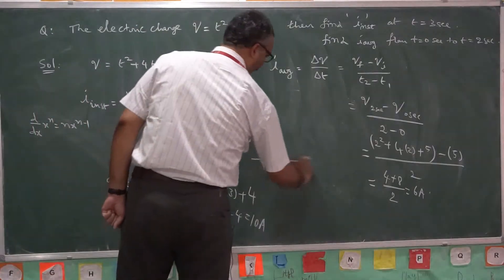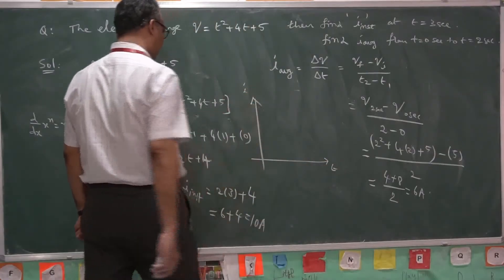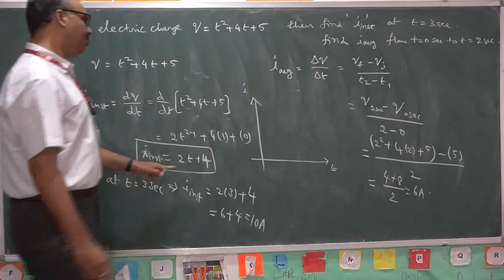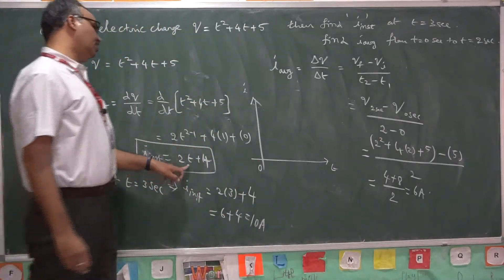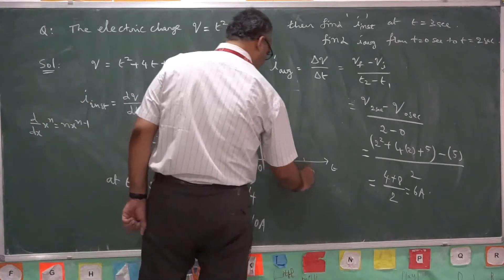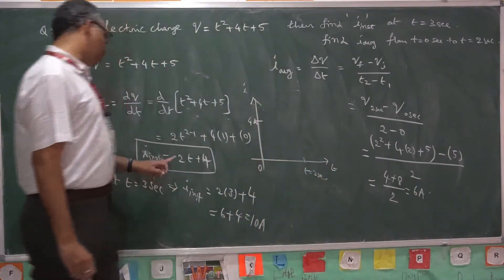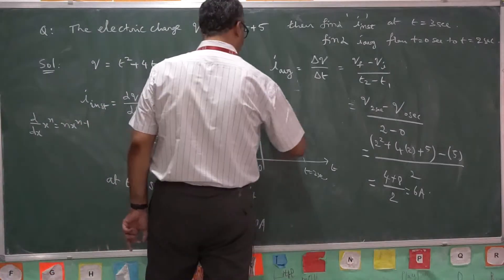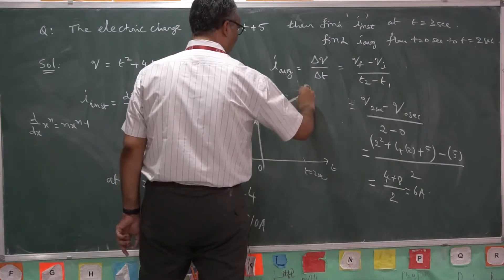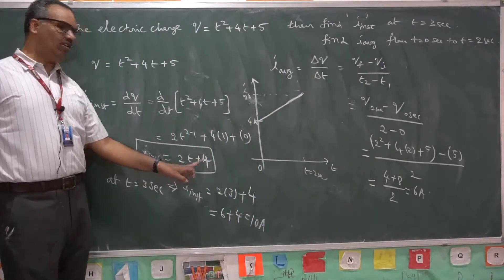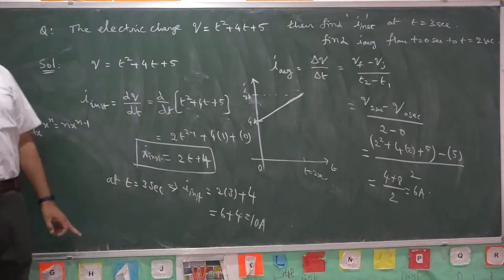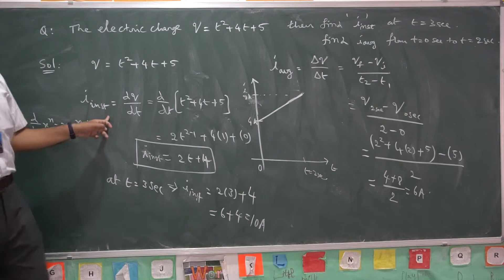If you want to draw a graph between current and time, time is on the x-axis and current is on the y-axis. Taking instantaneous current 2t + 4: at t = 0, current is 4 amperes; as time increases, current increases; at t = 2 seconds, current is 8 amperes. Clearly it is in the form of y = mx + c, so the variation of current with time follows a straight line. Whenever you are given charge, you are able to calculate instantaneous current as well as average current.